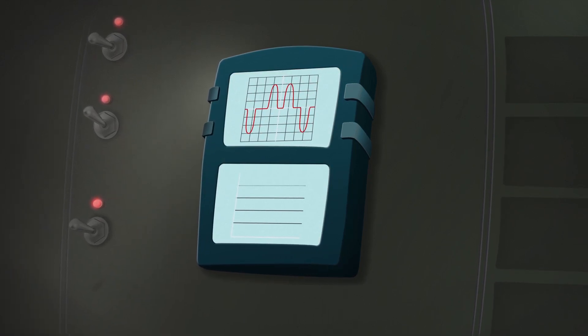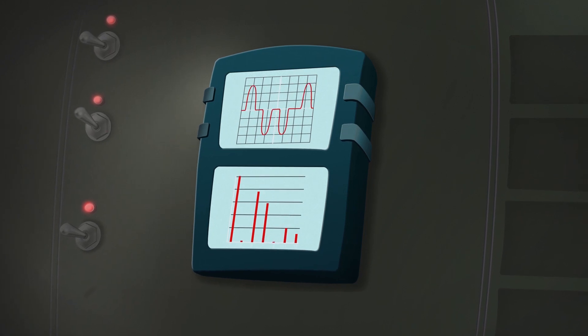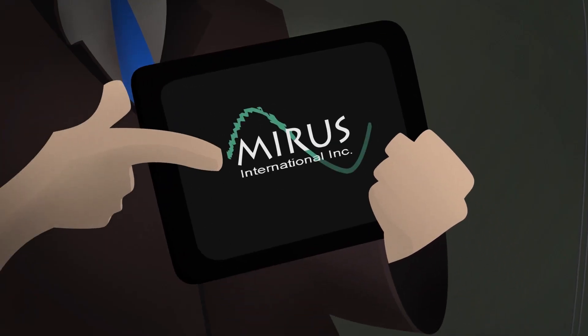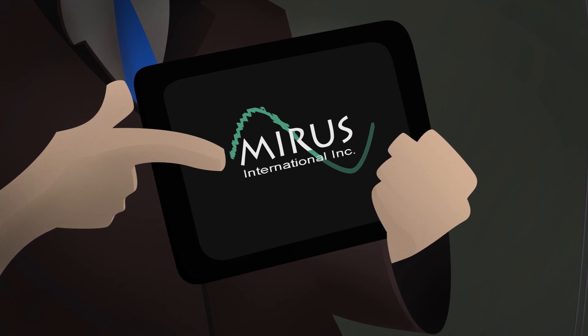These distortions are called harmonics and they're a serious threat to your power distribution system. MERIS has the solutions you need to keep your system under control.